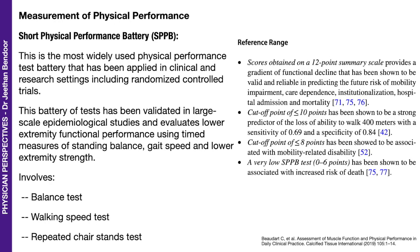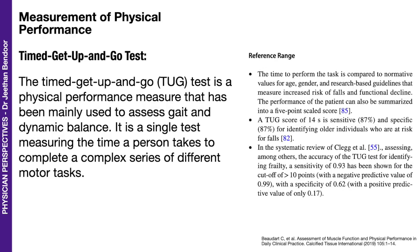The short physical performance battery (SPPB) is the most widely used group of tests, involving balance tests, walking speed tests, and repeated chair stands. A very low SPPB score of 0 to 6 points has been shown to be associated with increased risk of death. The timed get up and go test is a physical performance measure mainly used to assess gait and dynamic balance — a score of 14 seconds is sensitive and specific for identifying older individuals at risk of falls.